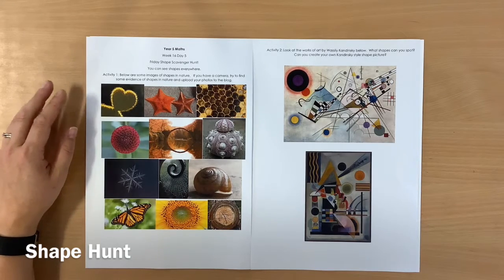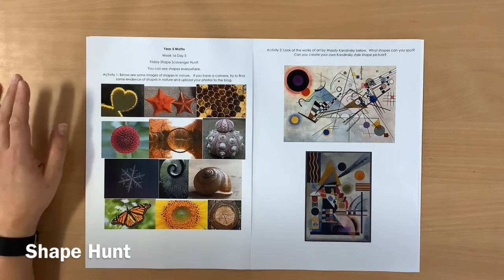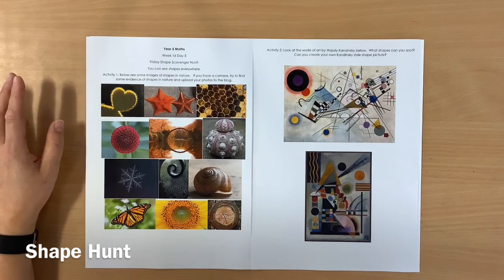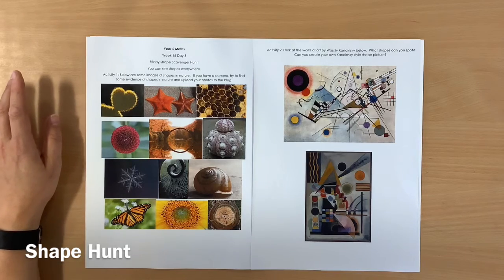But for now, here are some pictures that I've found that show different shapes in nature. And I'm challenging you to try to find me something, maybe in your garden, or if you're on for a daily walk, you could find something for me. And if you can, take a photo and upload it to the blog.